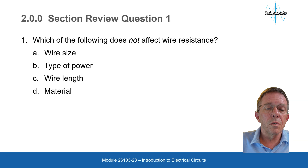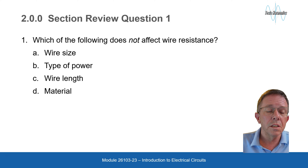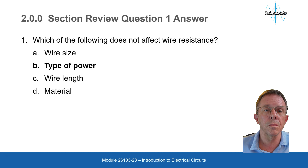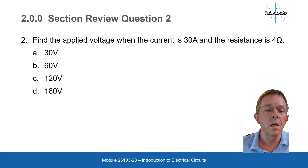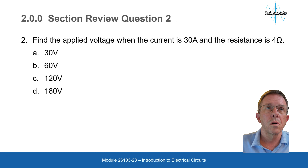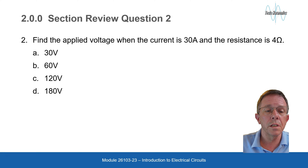Which of the following does not affect wire resistance: wire size, type of power, wire length, or material? The answer would be type of power. Find the applied voltage when current is 30 amps and resistance is 4 ohms. Voltage equals current times resistance: 30 times 4 would be 120 volts.